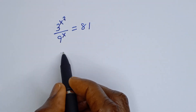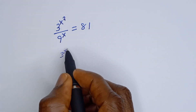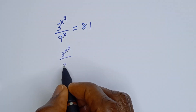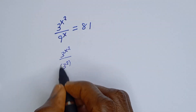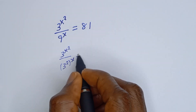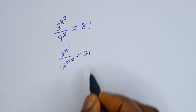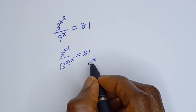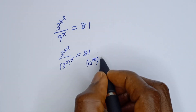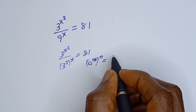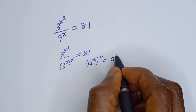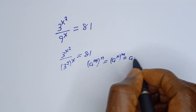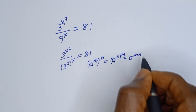We have 3 to the power of x squared divided by 9 to the power of x, which can be written as 3 squared to the power of x is equal to 81. Take note of this exponential rule: if you have a to the power of m, to the power of n, this is equal to a to the power of n to the power of m, which is equal to a to the power of m times n.